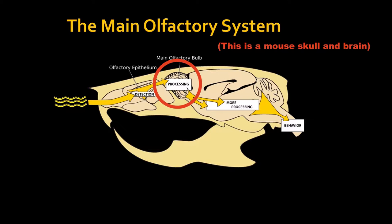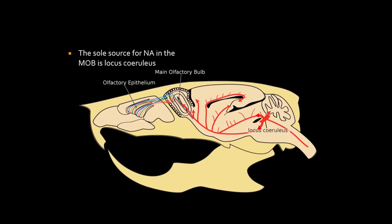What they found was that first it's necessary that there is a noradrenaline surge into the main olfactory bulb. Noradrenaline is a neuromodulator released by an area in the center of the brain into many brain regions. It induces plasticity and increases the signal-to-noise ratio of the neural signal, meaning signals are easier to differentiate for the animal when noradrenaline is present.